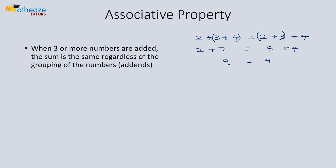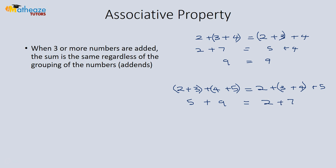Let's look at an example with 4 numbers: 2 plus 3 plus 4 plus 5. Grouping as (2+3)+(4+5) gives 5+9=14, and grouping as (2+3+4)+5 gives 7+5=14. Both sides equal 14. To recap: if you have three or more numbers added together, the sum will be the same regardless of how you group the numbers.